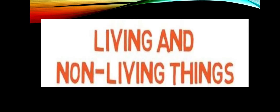So the things that we see around us, we can classify these things into two categories: first is living things and second is non-living things. So today we will study about these things only — living and non-living things.